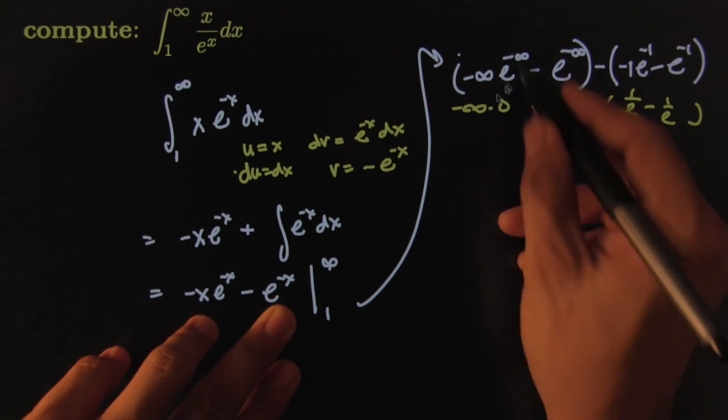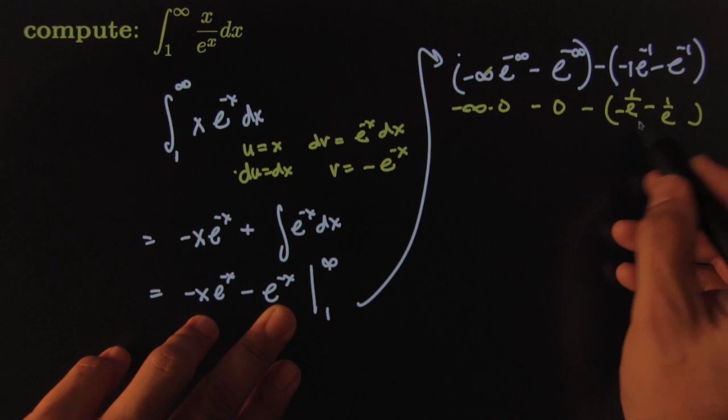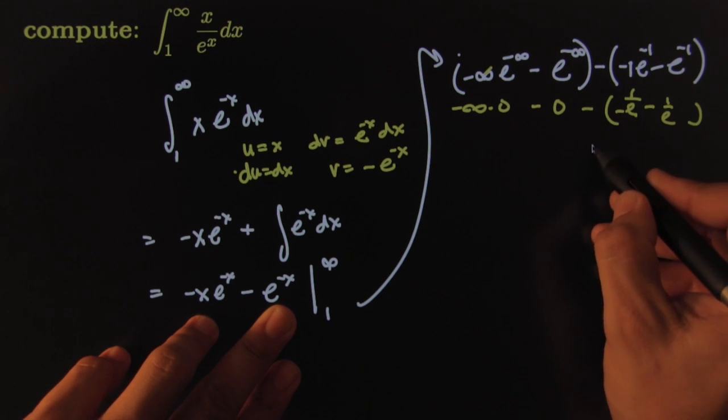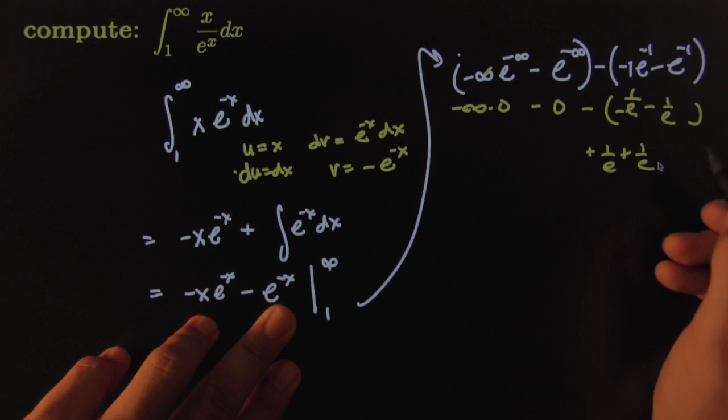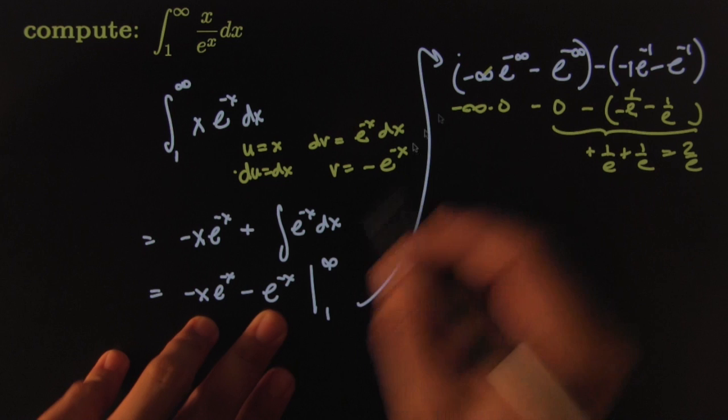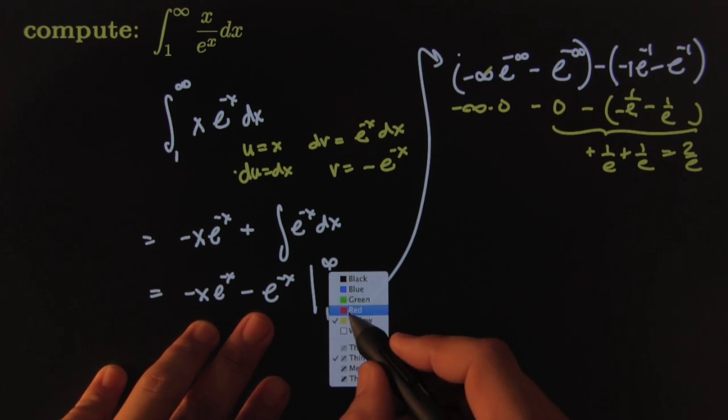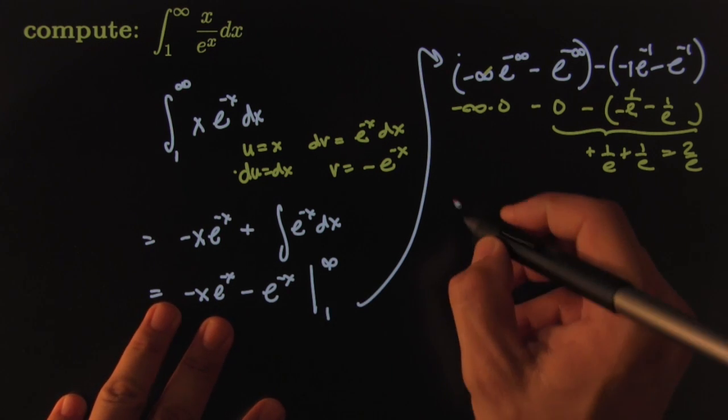So whatever this guy is, I will distribute this. It will become plus 1 over e plus 1 over e. So it will become 2 over e for this piece right here. And I still have to figure out what that one is. So I said before, whenever you run into trouble, you have to use your limits here.